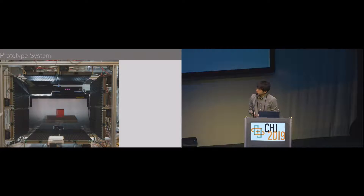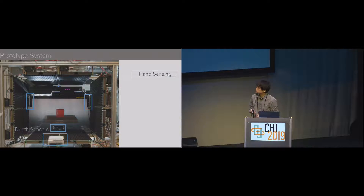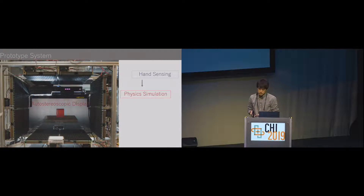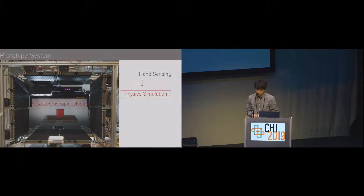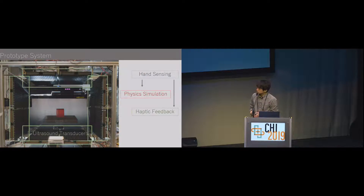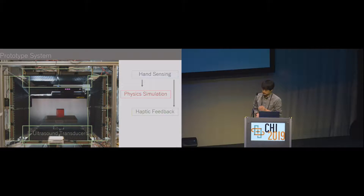I will show an overview of our prototype system. Multiple depth cameras are set to detect hand shape and motion as a point cloud. When the point cloud is inside the virtual object, the hand is regarded as touching the object, and the movement of the object is physically simulated. The 3D image on the autostereoscopic display changes according to the result of this simulation. The point cloud is also used to determine where to generate ultrasound focus, and transducers surrounding the workspace provide haptic feedback at the contact location.